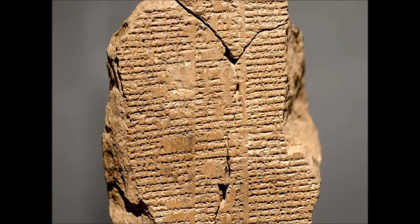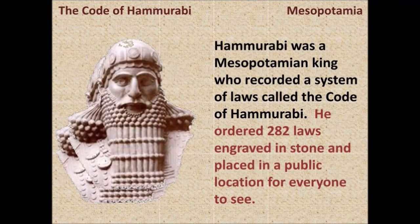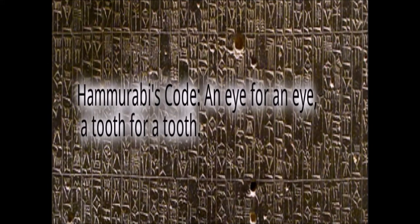Hammurabi's Code of Law. Hammurabi's Code is an important legal document specifying laws related to various crimes. It has 282 provisions covering family rights, trade, slavery, taxes, and wages. It was carved on stones, portraying Hammurabi receiving the code from sun god Shamash. The principle 'an eye for an eye and a tooth for a tooth' is central to Hammurabi's Code.